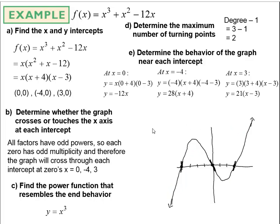Even though this is a rough sketch, it contains really good detail about the graph's behavior. The only information missing is exactly where the graph turns around — the y-value of each local min or max — since we haven't scaled the y-axis. Until we use a graphing tool, we don't know those precise values, and that's acceptable. Our analysis leads us to a detailed and accurate sketch of the polynomial.